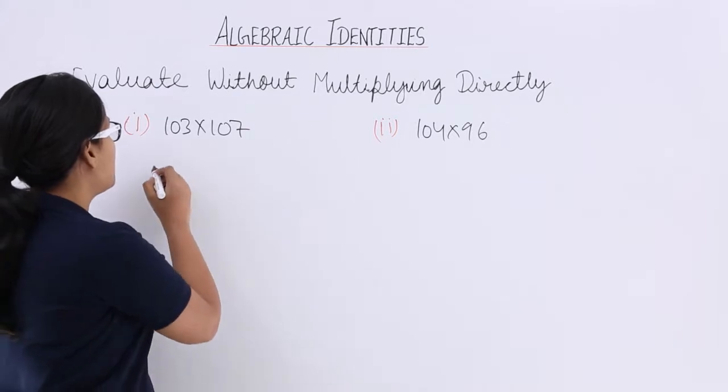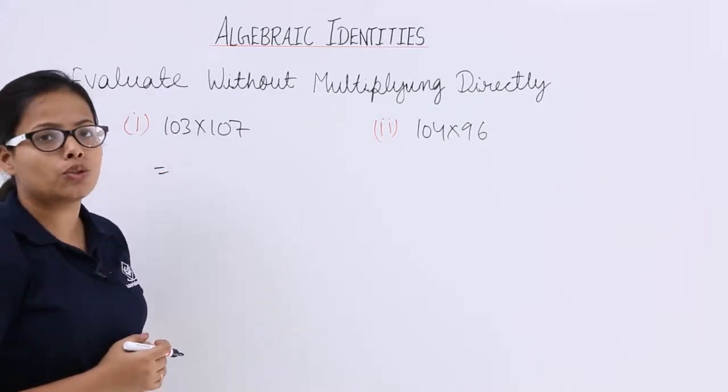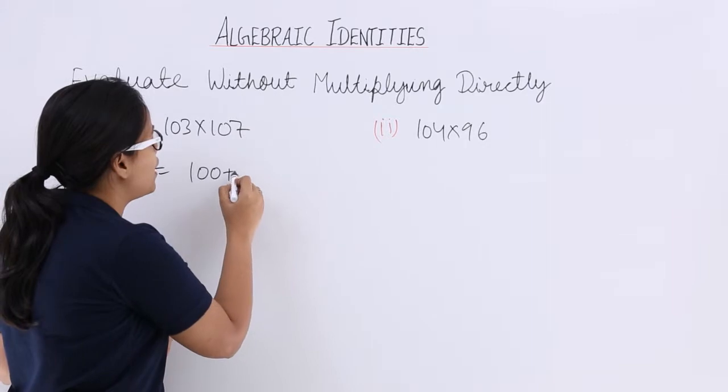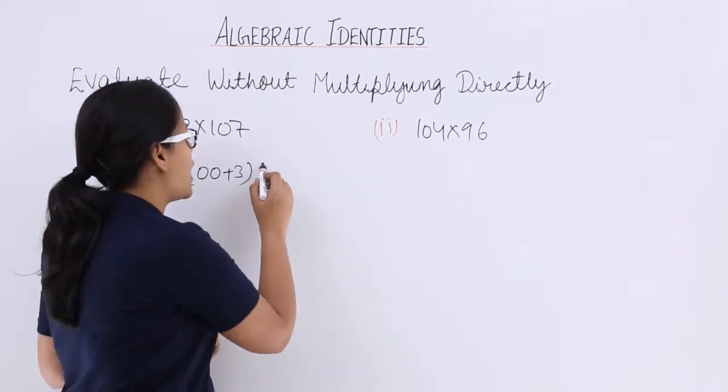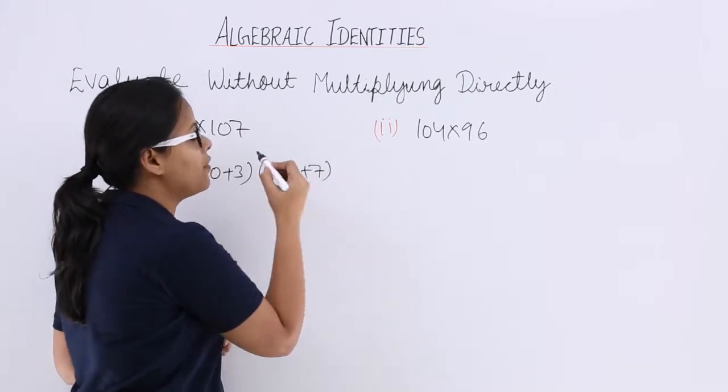So let's see, how you can write 103? You can write 103 as 100 plus 3 and you can write 107 as 100 plus 7.